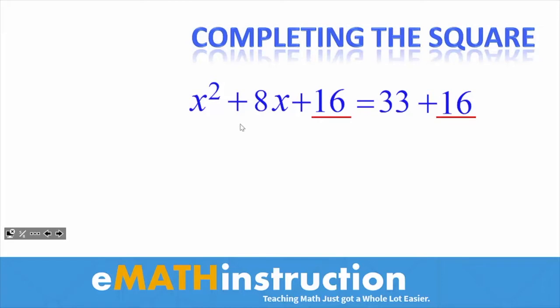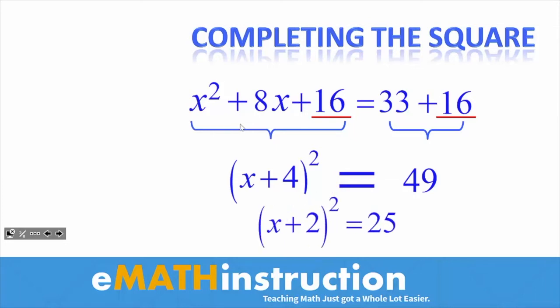The cool thing is by taking half of that 8, squaring it, and getting 16 and adding it on, that trinomial can now be written as (x+4)². It is a perfect square. You can factor it as (x+4)(x+4). Of course 33+16 is just 49. But now we've rewritten our original equation x²+8x=33 as (x+4)²=49. Of course we could solve that just like we solved (x+2)²=25. We're not actually here in this video looking to solve those. We're just going to try to understand why you divide that 8 by 2 and square it and add it on. So let's take a look at why that works. It's really fascinating.